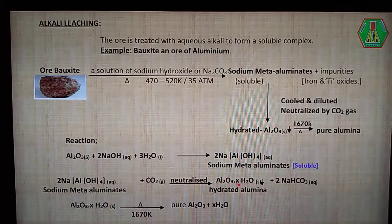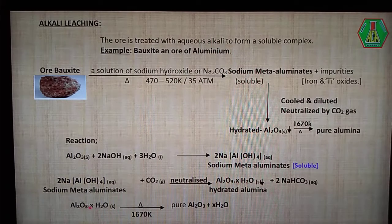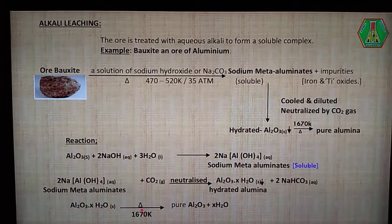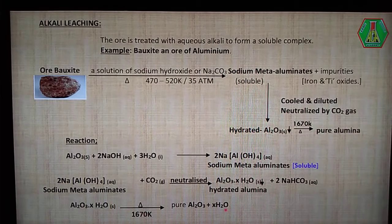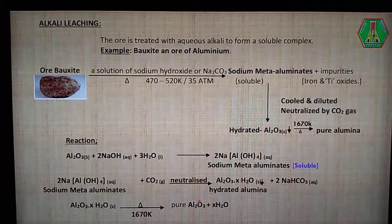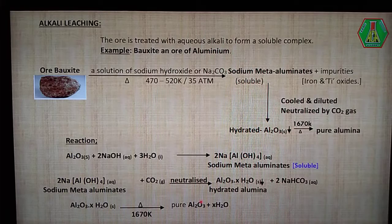Here x means a number of moles of water, maybe 1 mol or 2 mol. This hydrated alumina is introduced into a heating process of about 1670 Kelvin to get pure alumina; the water is removed by evaporation. At the end of the alkali leaching process, we have pure alumina, which is introduced into further metallurgical processes to get pure aluminum metal.